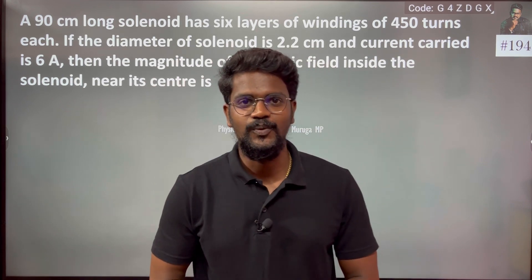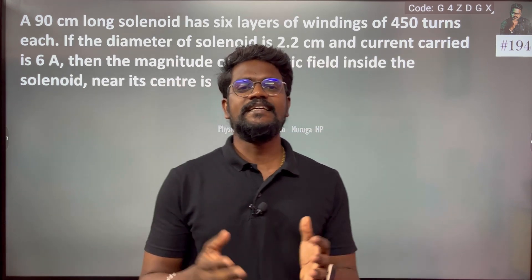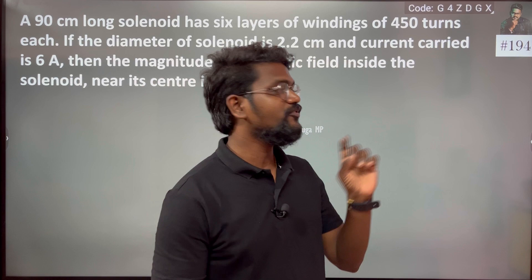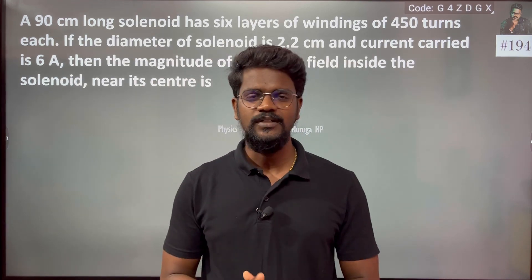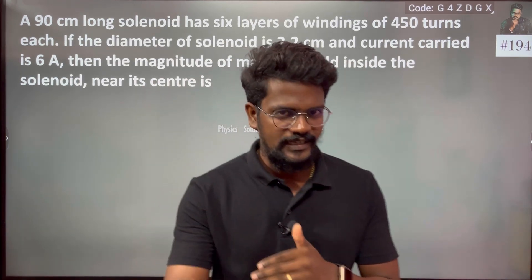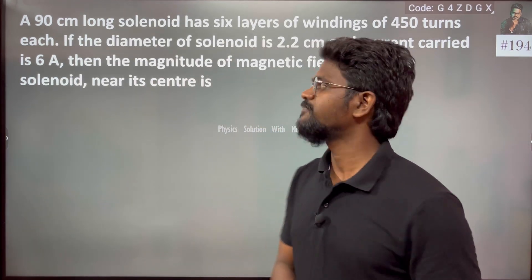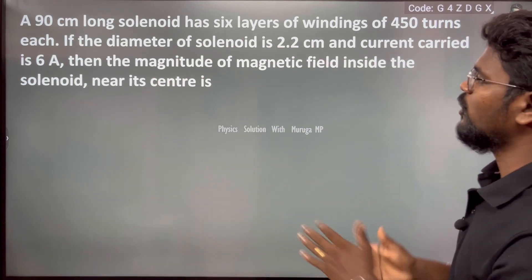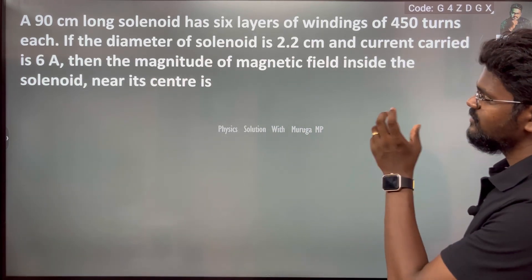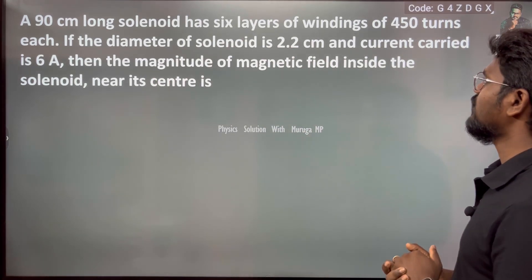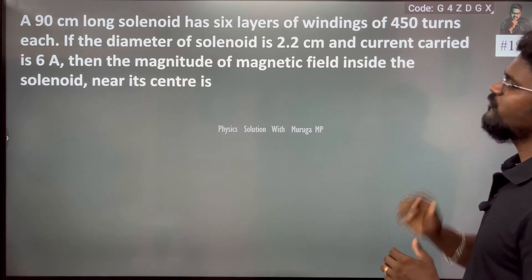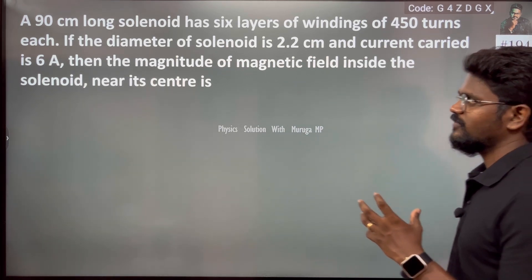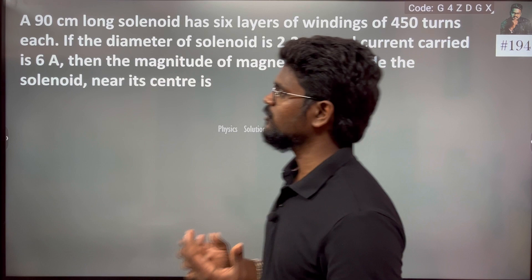Hi everyone. I will try to find a problem with this. A 90cm long solenoid has 6 layers of windings of 450 turns each. That's why we have a long solenoid.